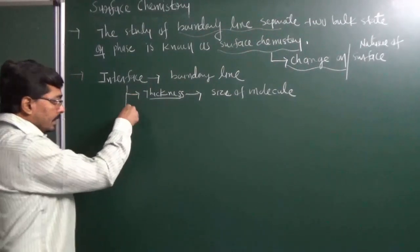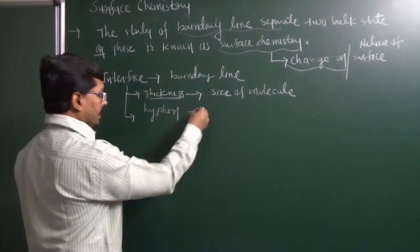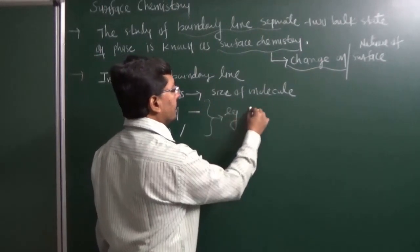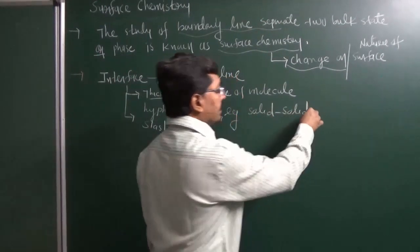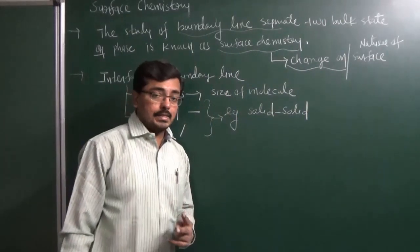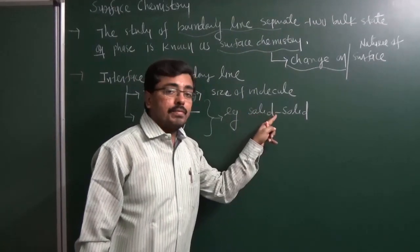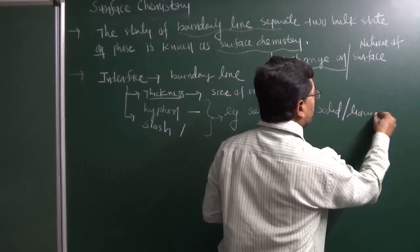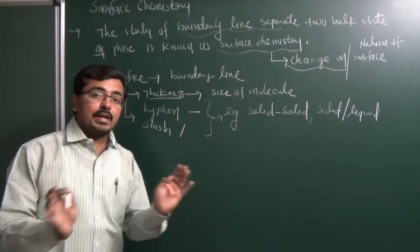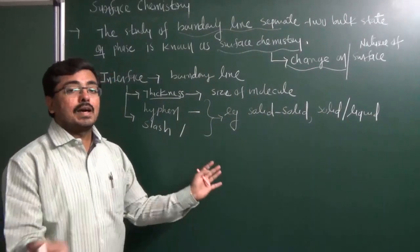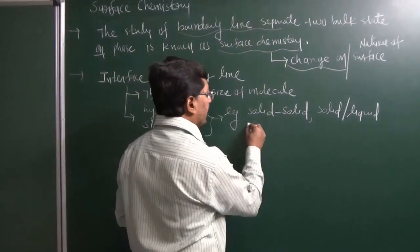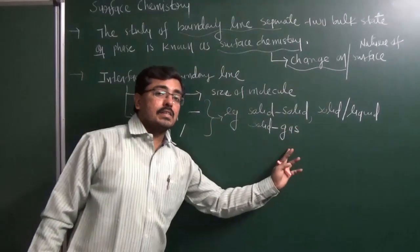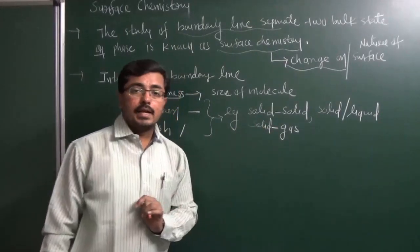Interface is generally denoted by a hyphen or a slash. For example, 'solid-solid' means two solid phases are in contact with each other and an interface is present between them. Similarly, 'solid-liquid' means two different phases — solid and liquid — are in contact with each other, coexisting but separated by a boundary line. We can also write 'solid-gas,' meaning the solid phase and gaseous phase are in contact and separated by an interface.